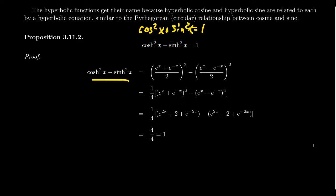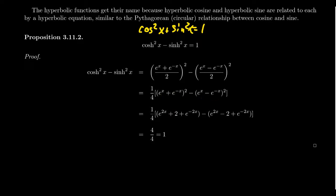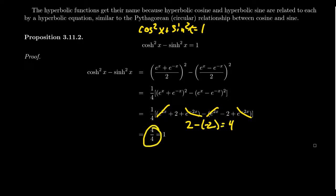Proving this hyperbolic identity is fairly straightforward. If you take cosh squared minus sinch squared and plug in their definitions — (e^x + e^(-x))/2 squared minus (e^x - e^(-x))/2 squared — and foil that out, squaring the 2 gives a one-fourth factor out front. Foiling the numerators, you get e^(2x) + 2 + e^(-2x) for cosh squared, and e^(2x) - 2 + e^(-2x) for sinch squared. Subtracting, the e^(2x) and e^(-2x) terms cancel, leaving 2 minus negative 2 equals 4. So you get 4 over 4, which equals 1.